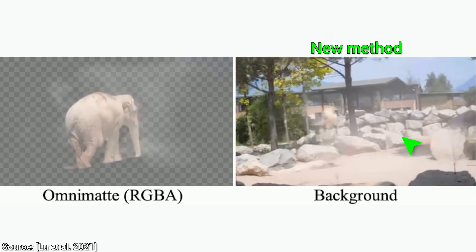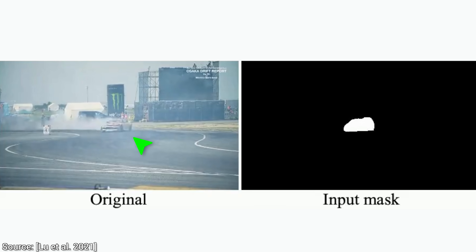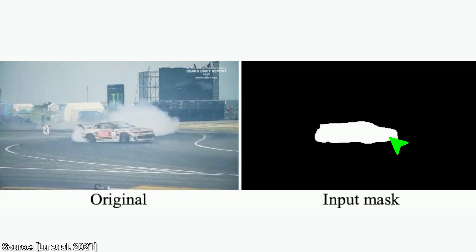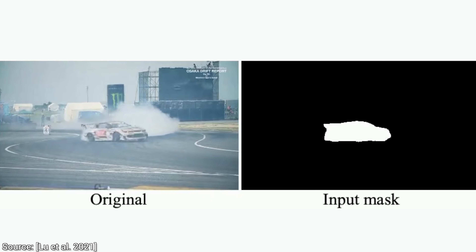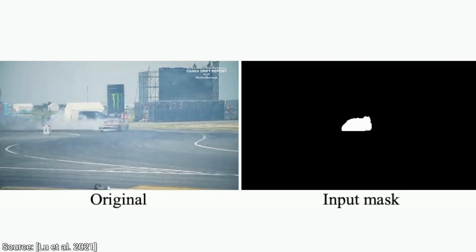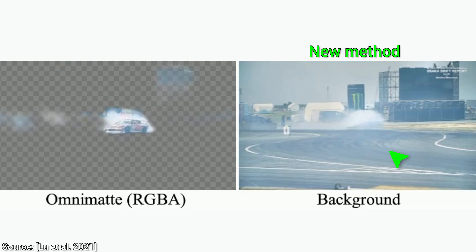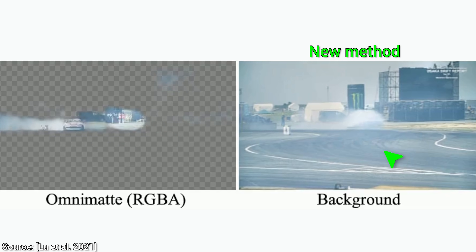And if you think that this dust was the new algorithm at its best, then have a look at this drifting car. The previous method? Yes, that is the car — but you know what I want? I want the smoke gone too. So, that's probably impossible, right? Well, let's have a look. Wow, I can't believe it. It grabbed and removed the car and the smoke together — and, once again, nothing to see here.